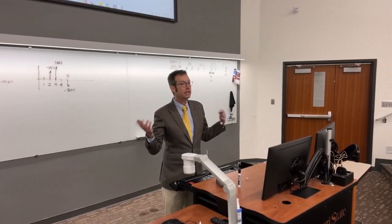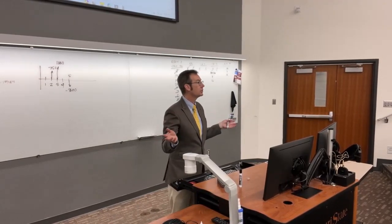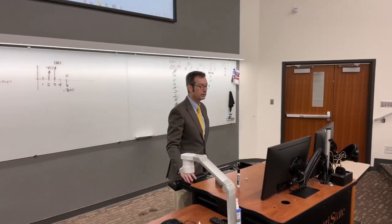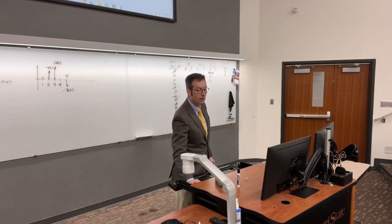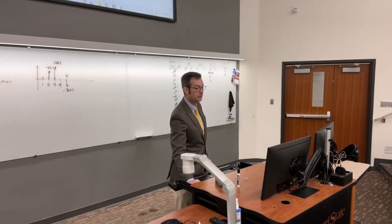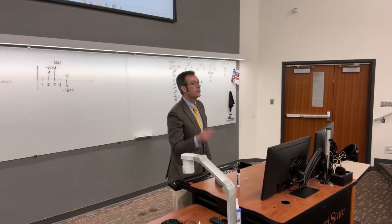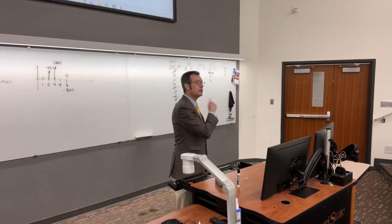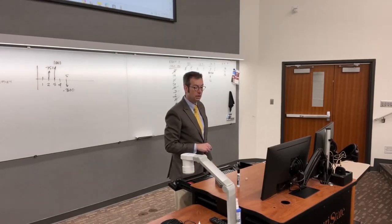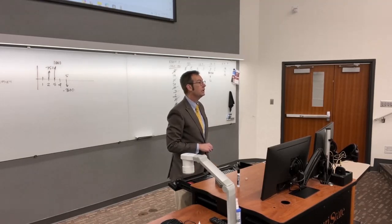Now hit NPV. The definition of NPV is the sum of the present values of all cash flows. Enter the interest rate of 6, enter, arrow down, then compute. The sum of present values is $1,282.94.